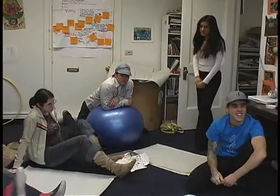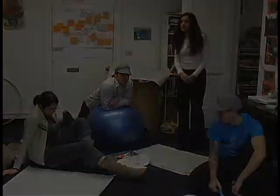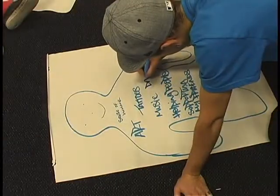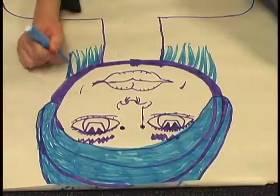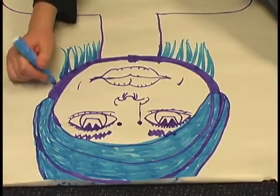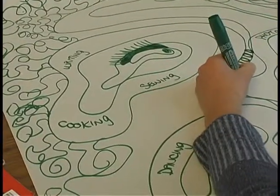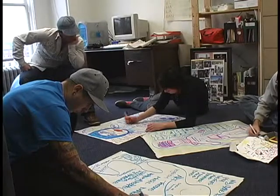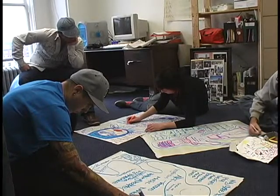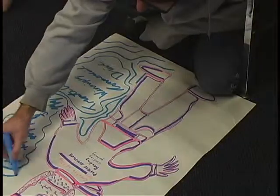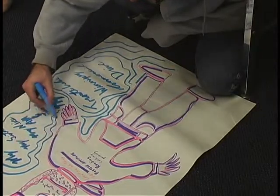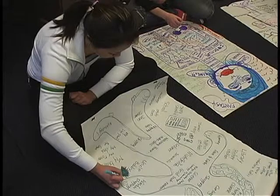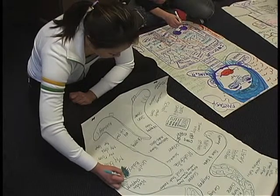What we're going to do now is create a figure, or anything that you guys think will represent you on paper. And inside, we're going to write all of our assets, all of the things that you're really good at. We're going to write the people that are important to you in your life and the places that you visit a lot, the places that mean something to you in the city.